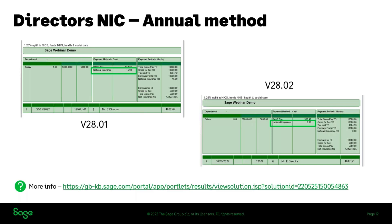If you're having to correct a director as well, just be aware that when reprocessing for a correction there may be some slight discrepancies on national insurance. Don't worry though — it will work out correctly over the course of the tax year. It's just an awareness piece if you start to see changes in national insurance amounts for directors.